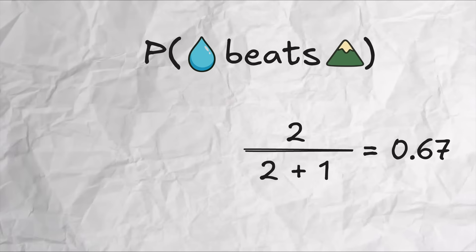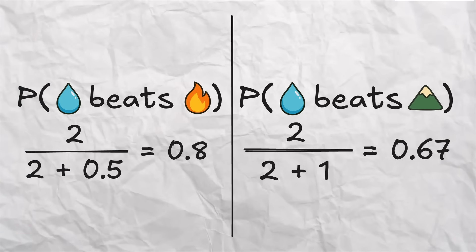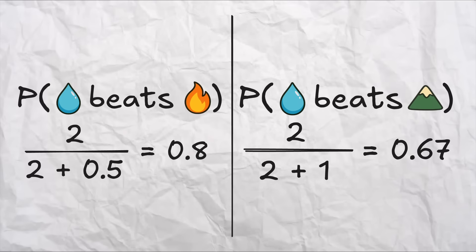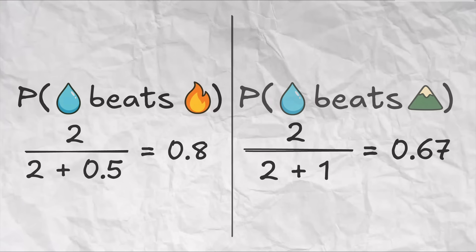Simply put, we find that while water is super effective against both fire and ground, i.e. the offensive relationship is the same, it is more dominant over fire when we factor in the defensive relationships.